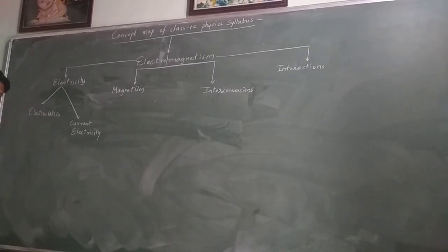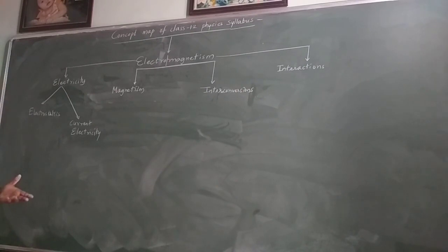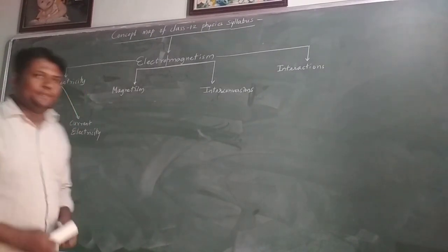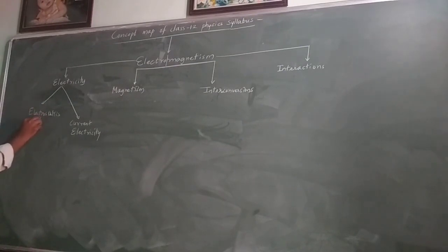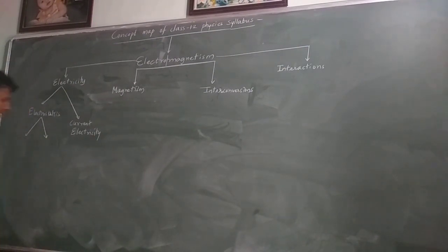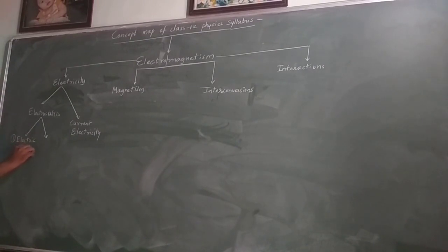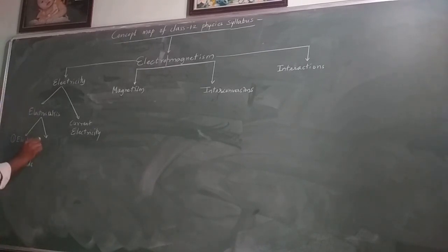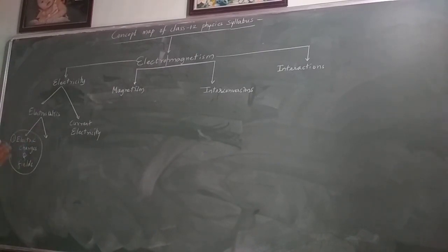Electricity is further split into two main categories. The first is electrostatics — the branch that deals with charges at rest. The second is current electricity — the branch of electricity that deals with charges in motion. Breaking electrostatics into two chapters: the first is Electric Charges and Fields, which is our main focus today. In this chapter, we study charges at rest.